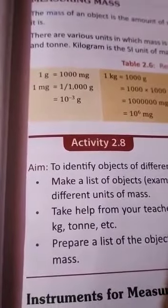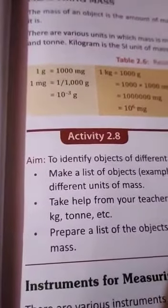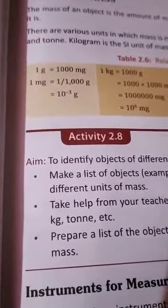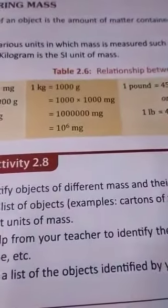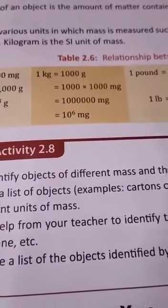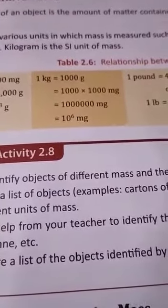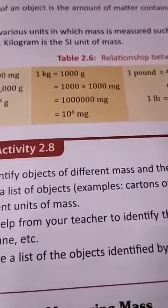1 gram is equal to 1000 milligram. 1 milligram is equal to 1 by 1000 gram or 10 to the power minus 3 gram. 1 kg is equal to 1000 gram, 1000 into 1000 milligram or 10 to the power 6 milligram.